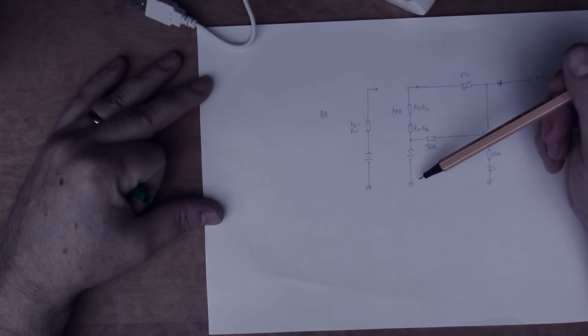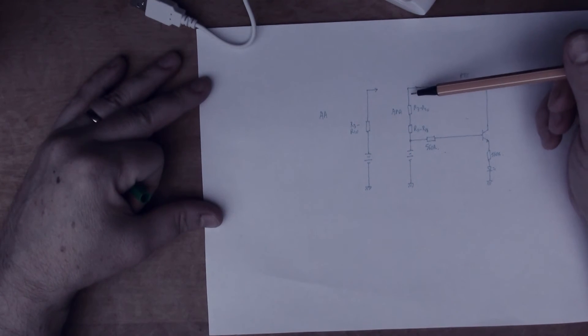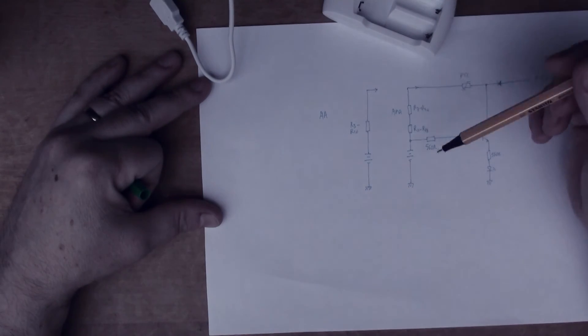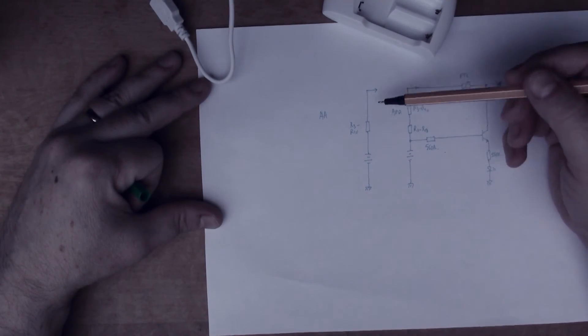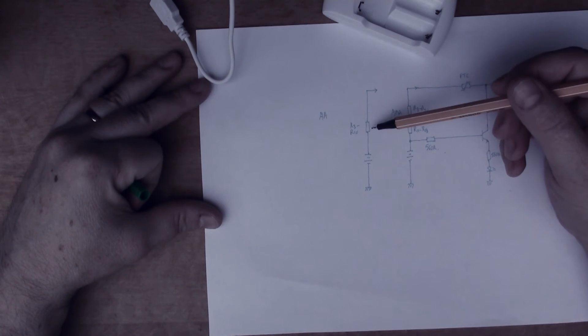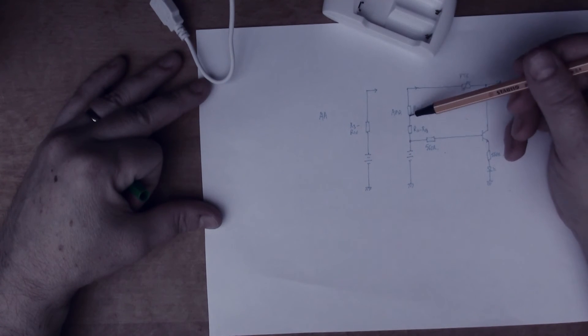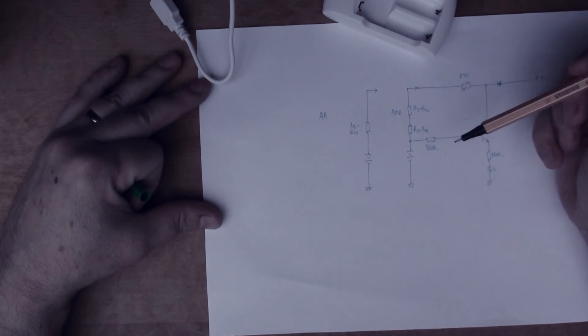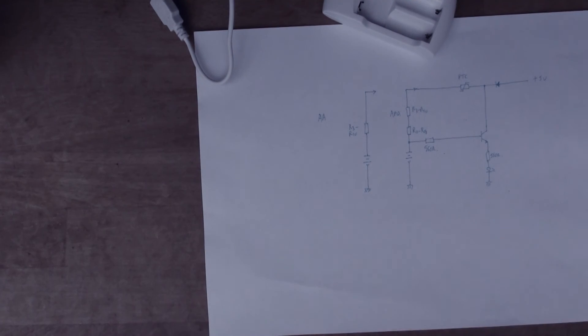Talking about the switching mechanism, depending on whether that little door is up or down, we've got a slightly different setup. In the case of AA cells, it goes through one set of resistors, so this provides a larger amount of current. Then when you flip the door down, you're going through two sets of resistors, so the AAA gets less current than its big brother.